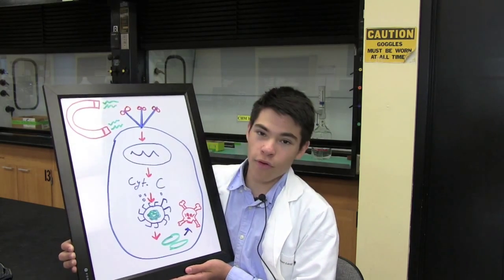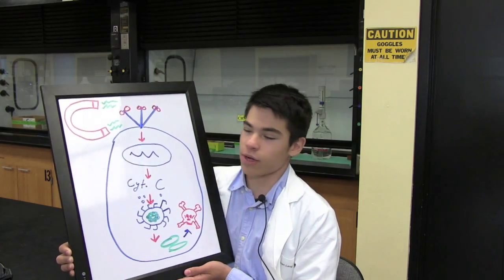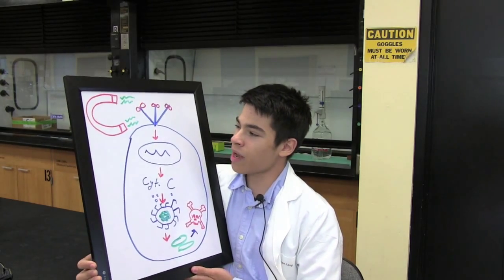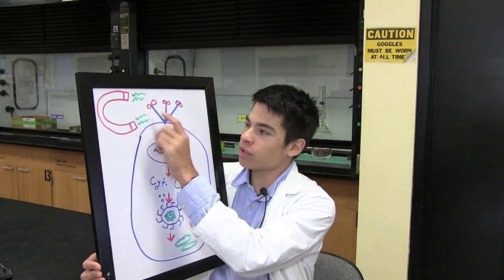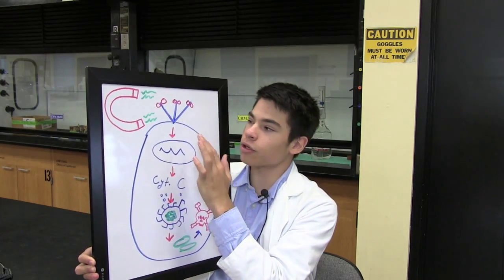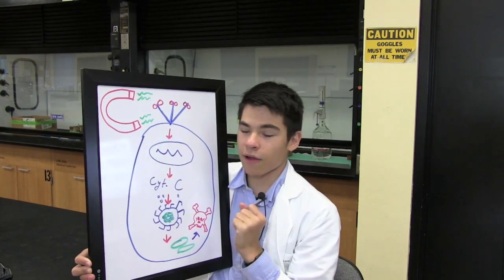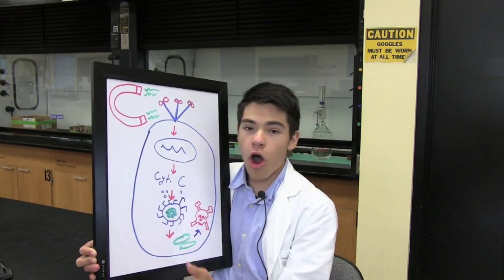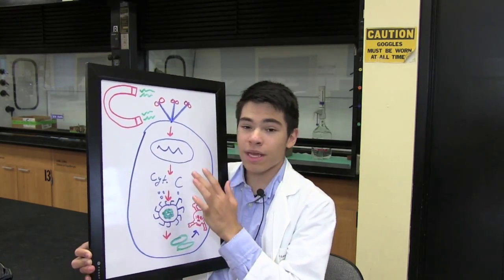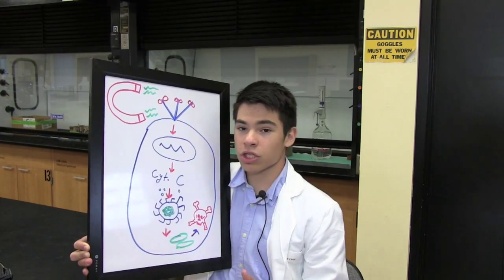What the scientists were able to do is they attached magnetic nanoparticles to the death receptor. And when they applied a magnetic field, they were able to turn on the death receptor and begin the signaling that would eventually kill the cell.